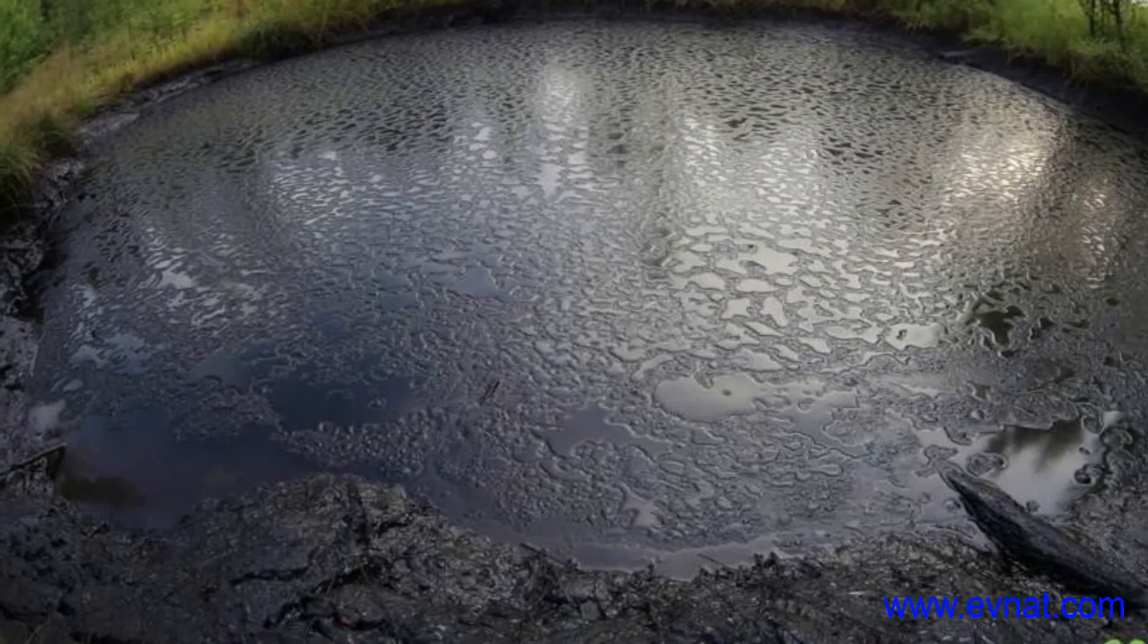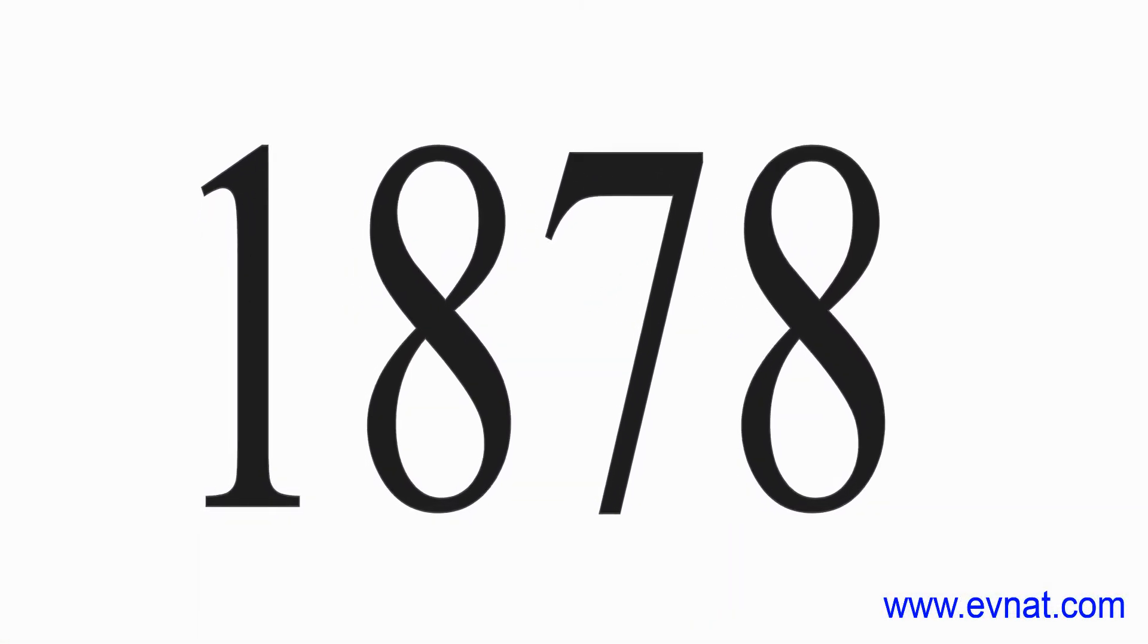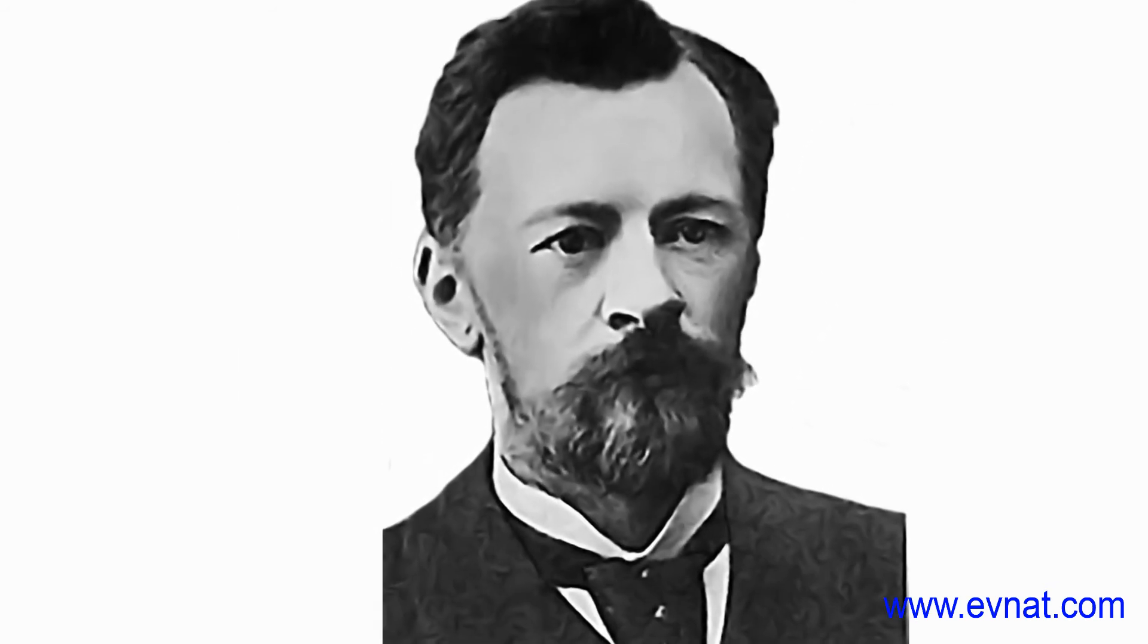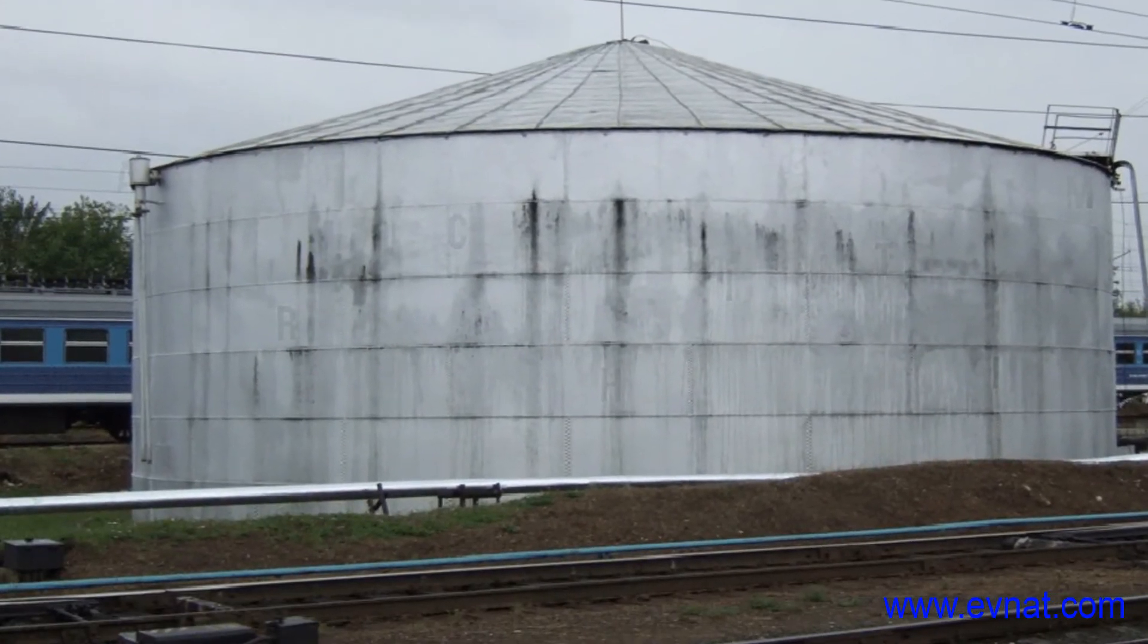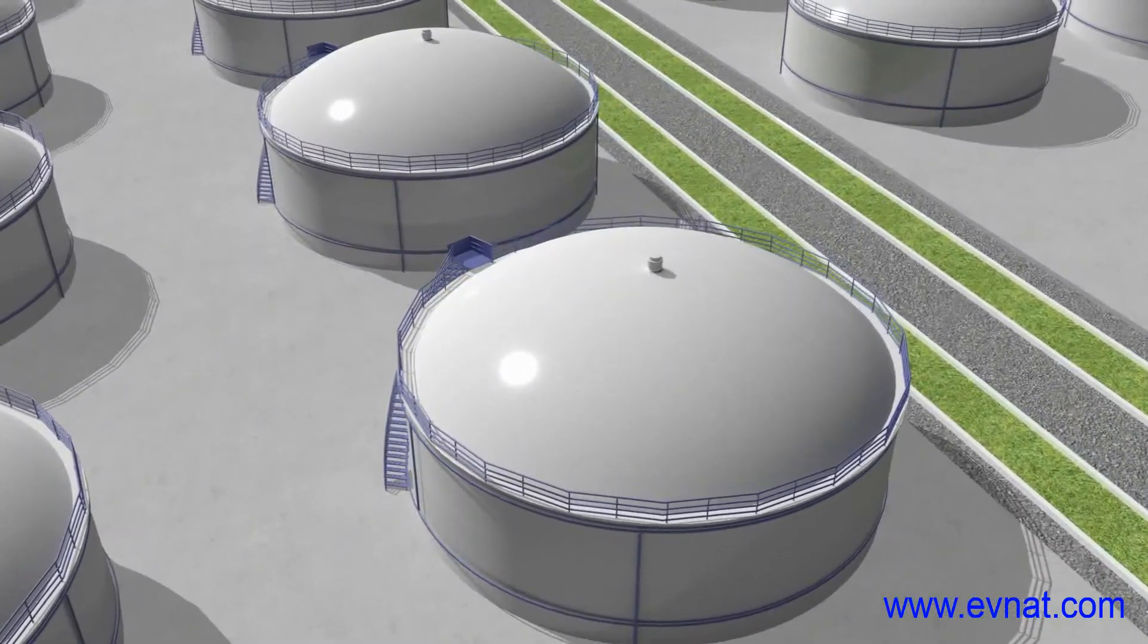The first crude oil storage reservoirs looked like normal lakes. In 1878 the first cylinder shaped metal oil tank was built as per the design of the Russian engineer Shukov. The structure proved to be so successful that it is still used for oil storage in all countries of the world.